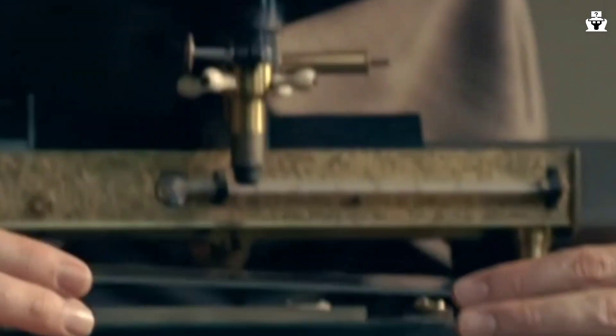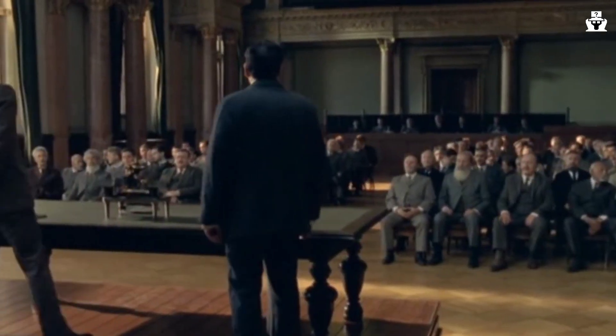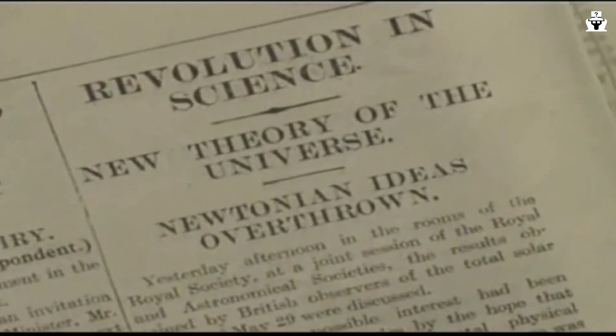Eddington announced the results of his experiment at a joint meeting of the Royal Society and the Royal Astronomical Society in London on November 6, 1919. The announcement caused a sensation in the scientific world, and helped to establish Einstein's theory of relativity as one of the cornerstones of modern physics.